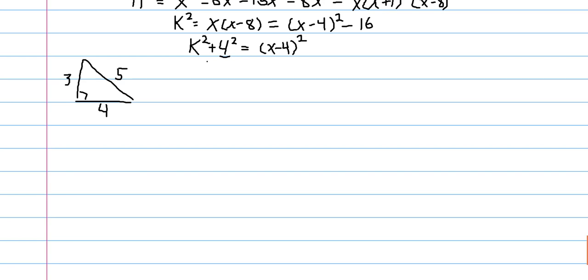But, since we have a Pythagorean triple here, we can actually see that 3, 4, 5 is the only non-degenerate case. So, this is actually another case if k were equal to 0. Because, then, we wouldn't have a triangle, but we could have 4 squared equals 4 squared.